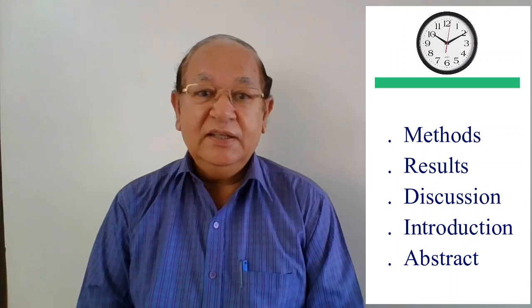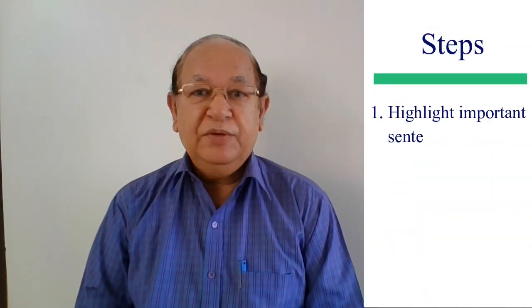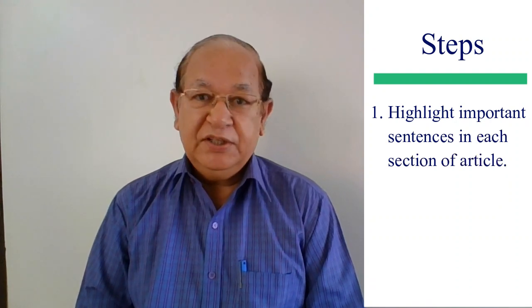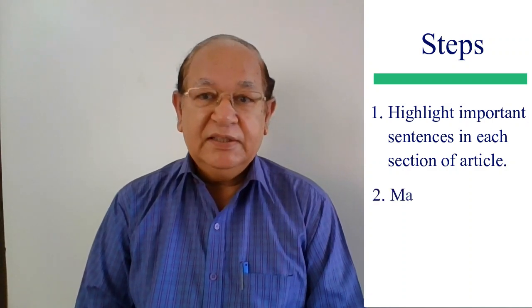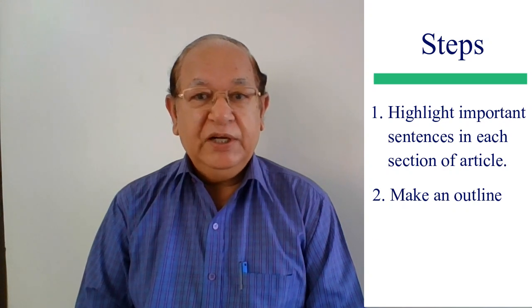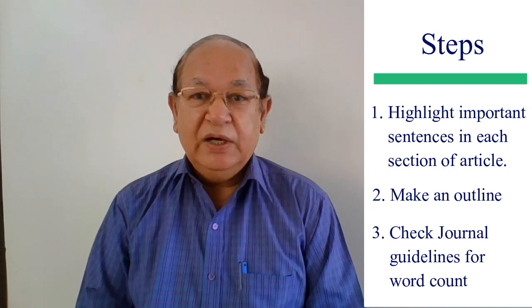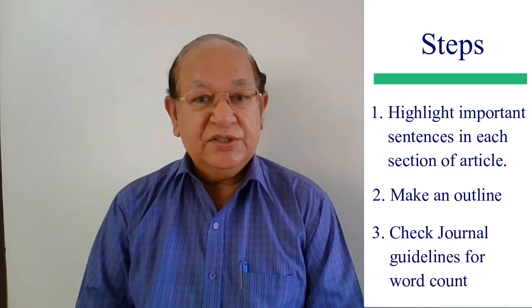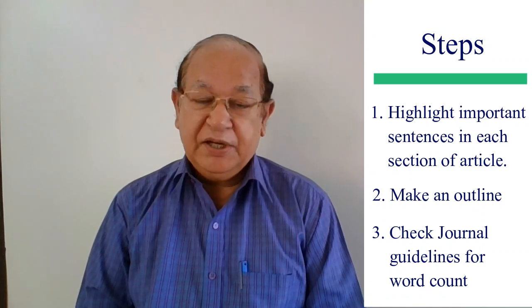When you have written all other sections, it is easy to condense all aspects of your work into a concise summary. Go through your paper and highlight the most important sentences in each section — introduction, methods, results, discussion, and conclusions — then use these sentences as an outline to write the abstract. It is also important to check your target journal's abstract guidelines, as some journals require a structured abstract with discrete sections, and most impose a strict word count limit.